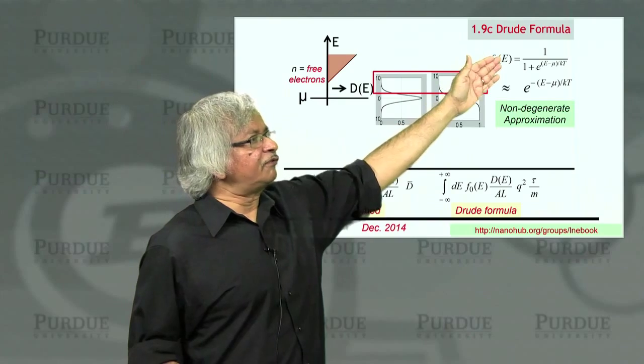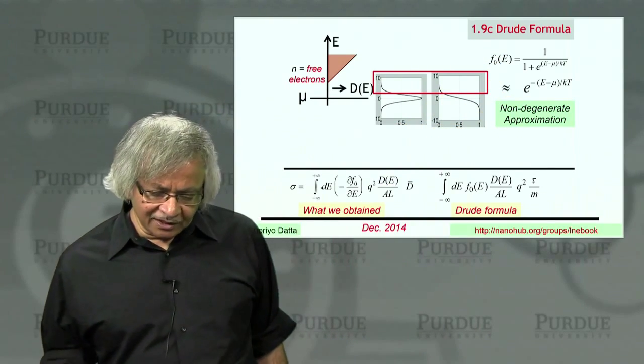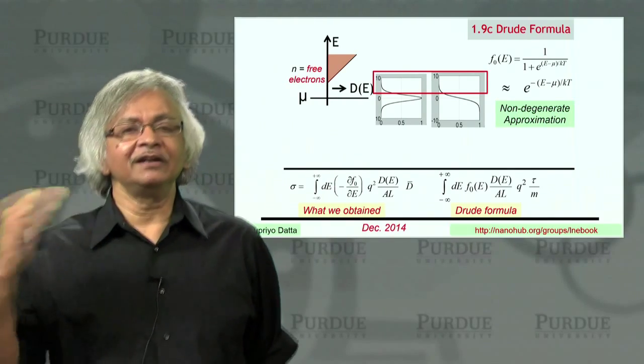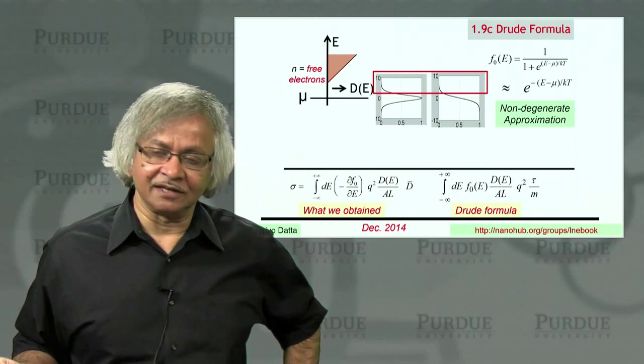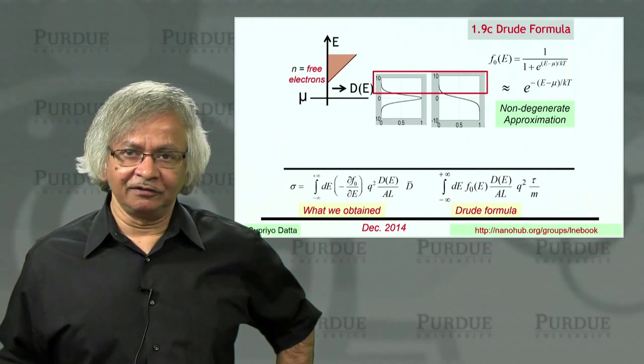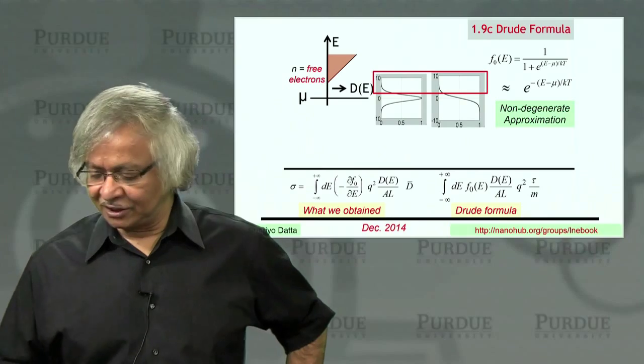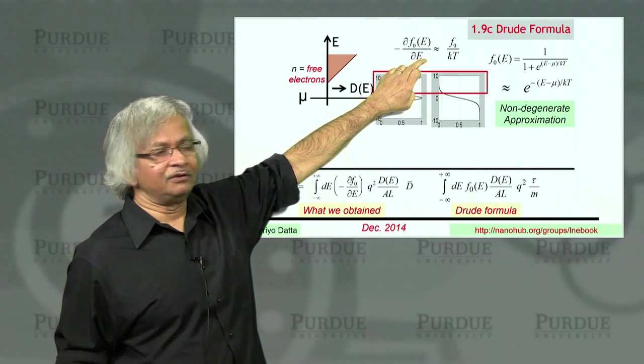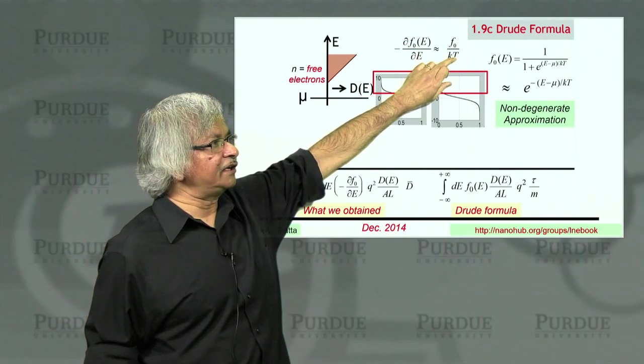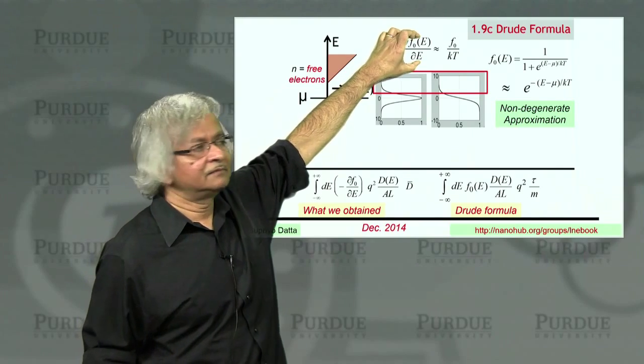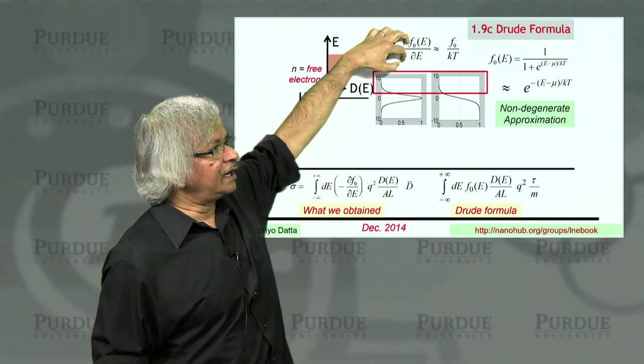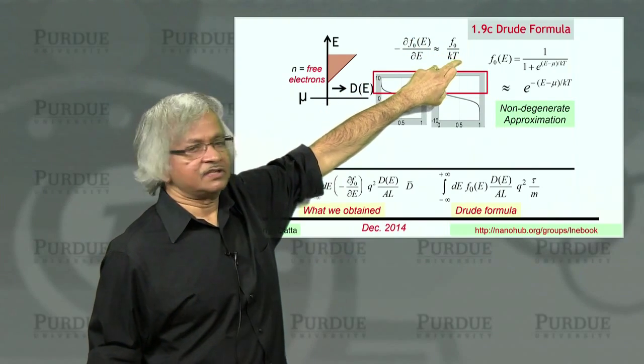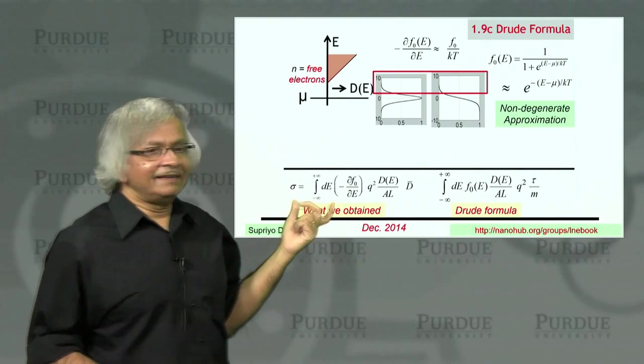Now the point is that the Fermi function is an exponential, then you see there's not much difference between f and dF, dE. Because one very nice property of exponentials is that whether you take derivatives or integrate, exponential stays an exponential. And so what you can show easily is that the derivative of f with respect to e is really just f divided by kT. So in other words, this function and that function are essentially the same shape. It's just scaled by this kT. That's all.